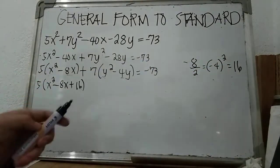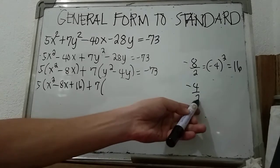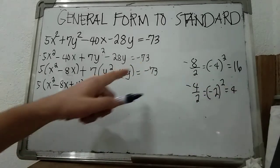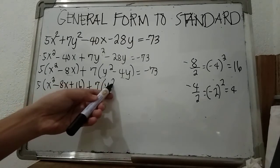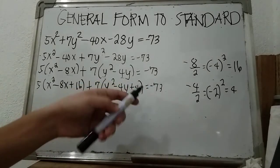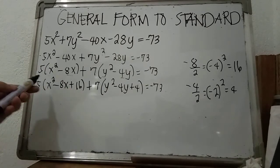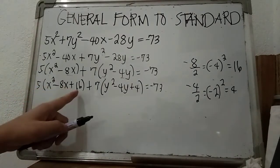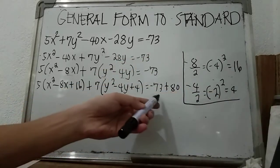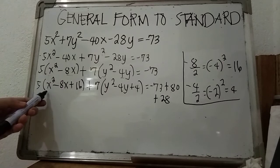The same process applies for the y-terms: take negative 4, divide by 2 to get negative 2, then square it to get 4. So we add plus 4 inside that parenthesis. To maintain balance, we add the equivalent values on the right side: 5 times 16 is 80, and 7 times 4 is 28, so we add 80 plus 28 to negative 73.